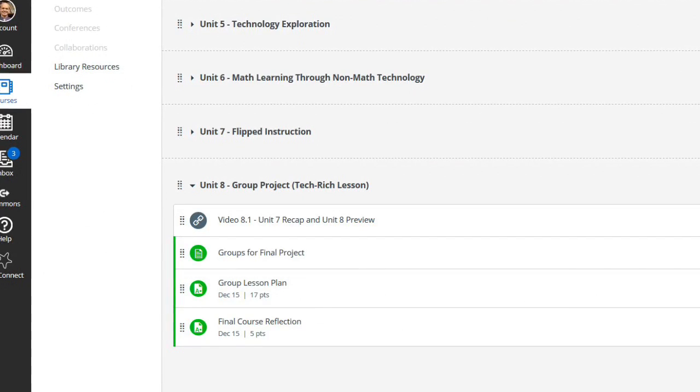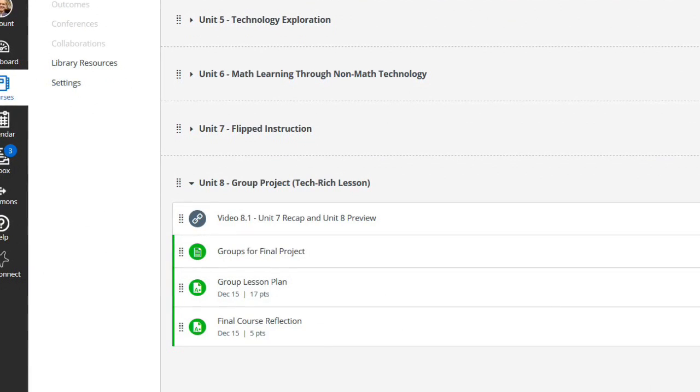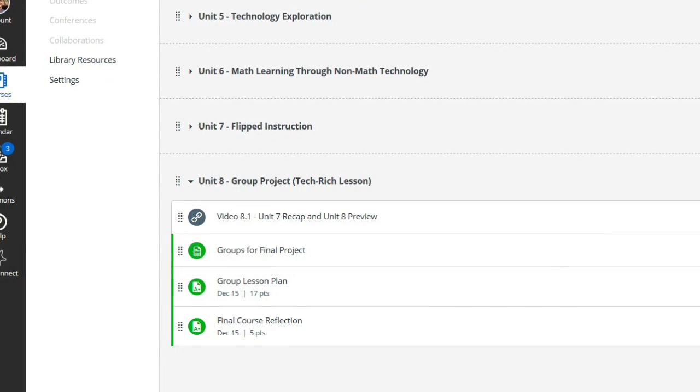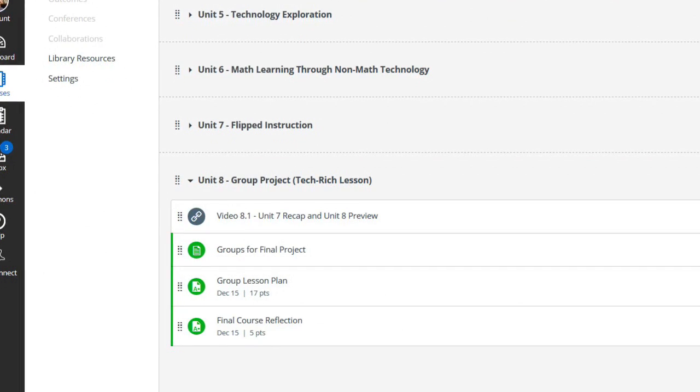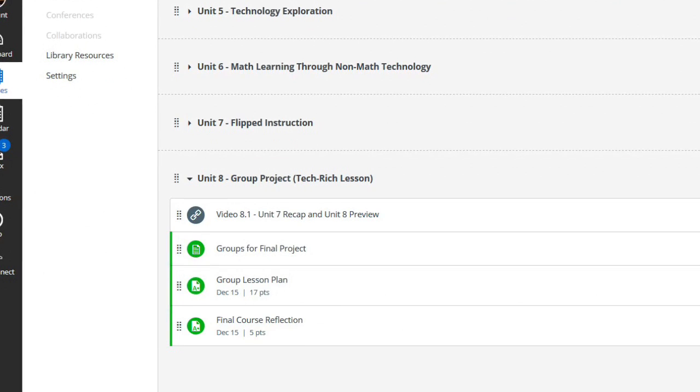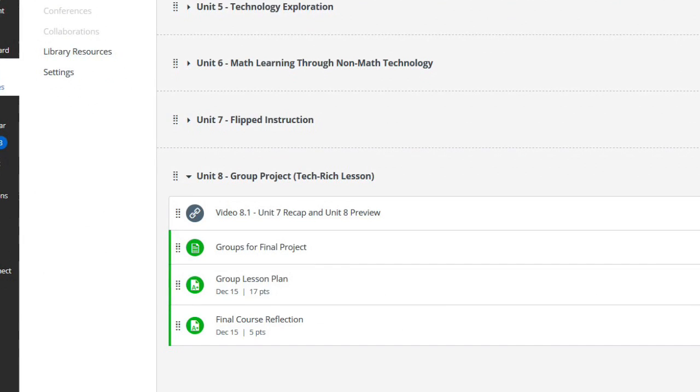But first, so the group lesson plan. The lesson plan can be in any format that you want. There's no specific length. But just include any key handouts or any key attachments so that we can see those. And then with your lesson plan, format it however you want, but we're just going to be looking for the three things that are described on Canvas in the assignment.